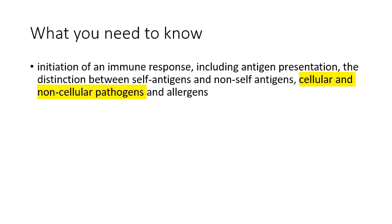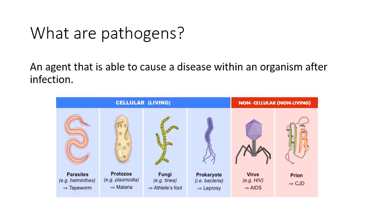So what is a pathogen? A definition for those of you who are keen to write one down: pathogens are an agent that is able to cause a disease within an organism after infection. The reason this definition doesn't say something such as a cell or a living organism is because pathogens aren't always cellular organisms.